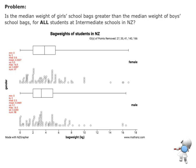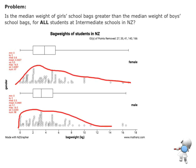So we want to do our shape first of all. I'm going to draw my shape over the top for my girls and shape over the top for my boys. In this one I can see that the females are right skewed and the boys are also right skewed in shape.